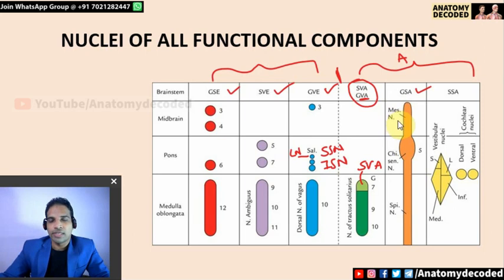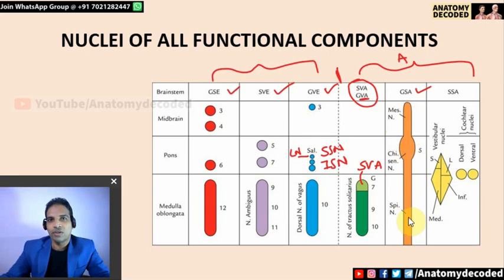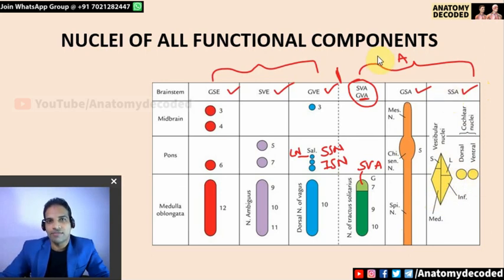The trigeminal nucleus has three components. The mesencephalic nucleus is responsible for proprioception. The chief sensory nucleus is responsible for touch and tactile sensation. The spinal nucleus is responsible for pain and temperature. For special somatic afferent, the vestibular and cochlear nuclei are included.